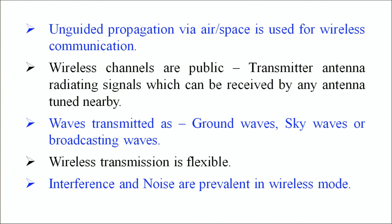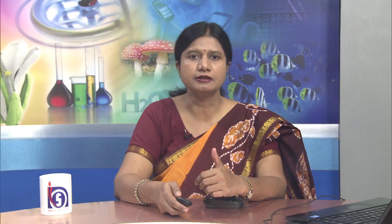For any kind of private information, a wireless channel is usually avoided. The waves are transmitted in various ways — one of them is ground waves, and the other is sky waves or broadcasting waves. The wireless transmission is highly flexible, but interference and noise are very prevalent in the wireless mode. In the wireline mode, there is less interference and noise, but in the wireless mode there is a very high possibility of interference and noise because the signal is available in the public domain — it is there in the air and any receiver can catch that signal.